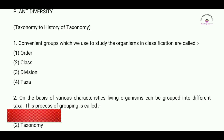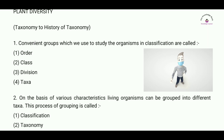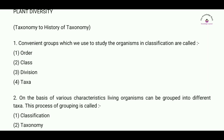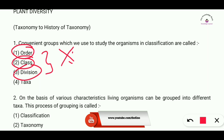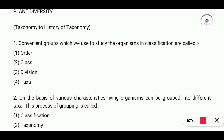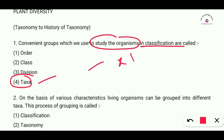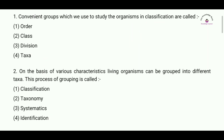First question: the convenient groups which we use to study the organisms in classification are called — options are order, class, division, or taxa. Here, order, class, and division are wrong options. The correct answer is option number four: taxa. The group which we use to study the organism in classification is called taxa.